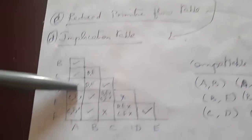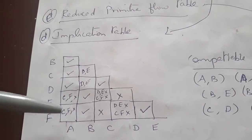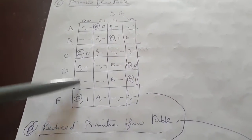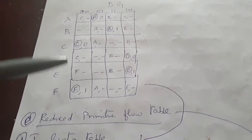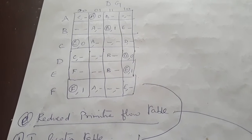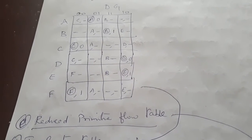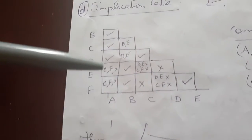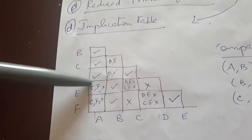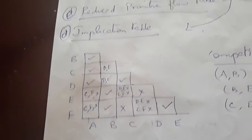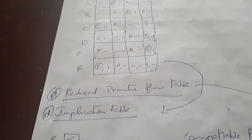Now compare A with E. At the first state itself, C and F are different. Even one state being different means compatible is not happening, so put a cross mark — C and F are not compatible. Similarly, A to F: C and F appear in the primitive flow table, so it is not compatible.